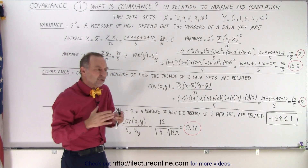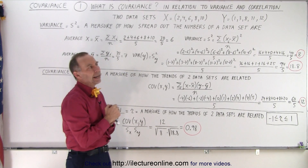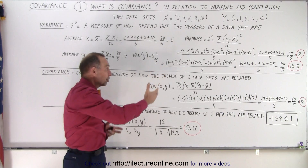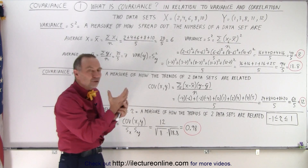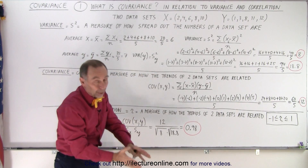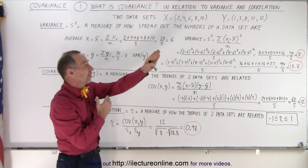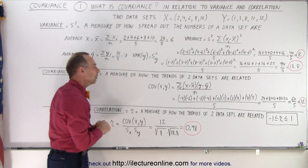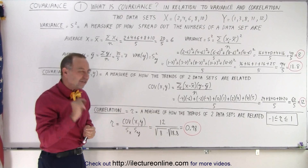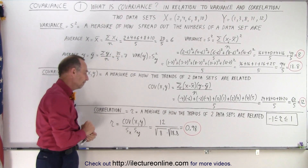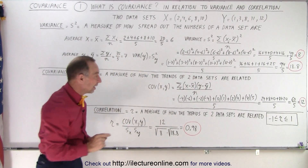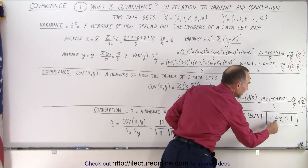The covariance is a positive number, which means the trends tend to be in the same direction. But is 12 a large number? That's hard to tell, because we could be using different sets of numbers — we don't have a clear sense of how strongly they're related. To get a better sense, we have what we call the correlation constant R, which is a measure of how the trends of two data sets are related, except R will always be a value between negative 1 and positive 1.